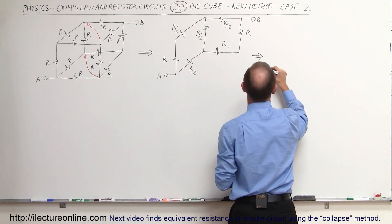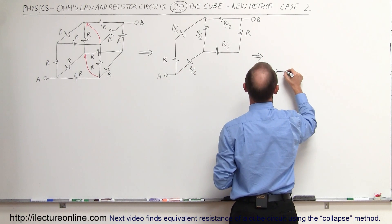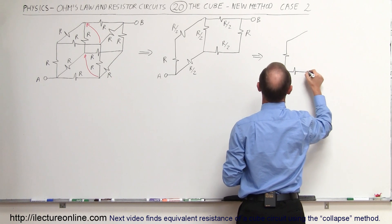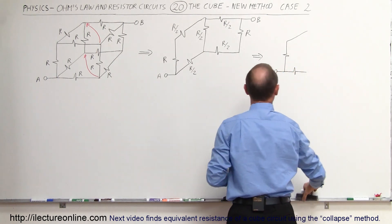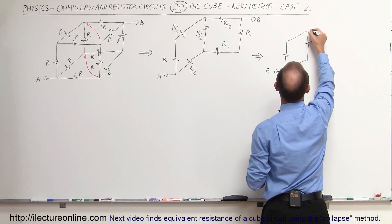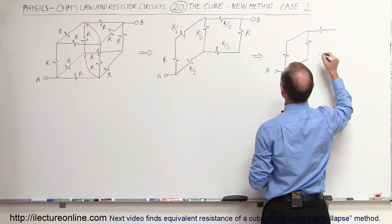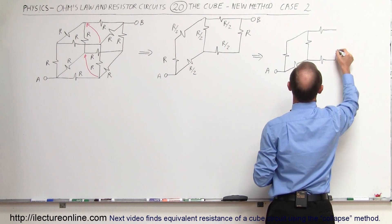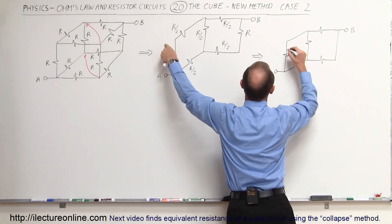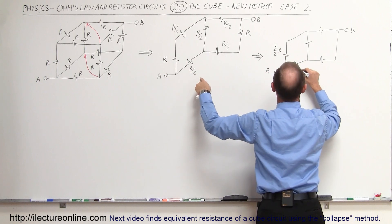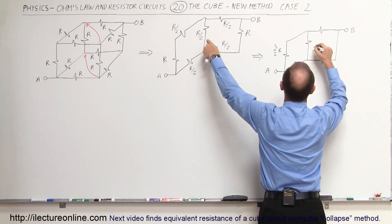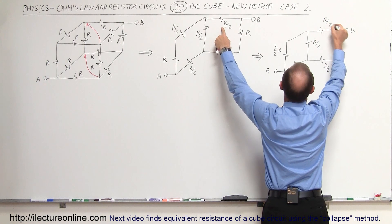This is point A. Here we have a single resistor, here we have a single resistor, and we want to draw it at an angle. So we still have this one right there, and here these two combine to form a single resistor, and this is point B. This one is these two combined, that would be 3/2 R. This one is still the same one, R/2. This one here is these two combined, that would also be 3/2 R. This one is R/2, and this one is R/2.